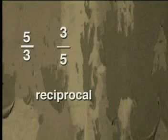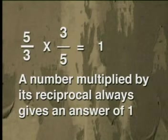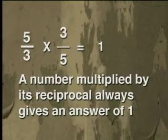Now, how do we find the reciprocal of a number? All we need to do is swap around the numerator and the denominator of our fraction. We say we invert the fraction. The reciprocal of 5 divided by 3 is 3 divided by 5. Remember, a number multiplied by its reciprocal always gives an answer of 1.